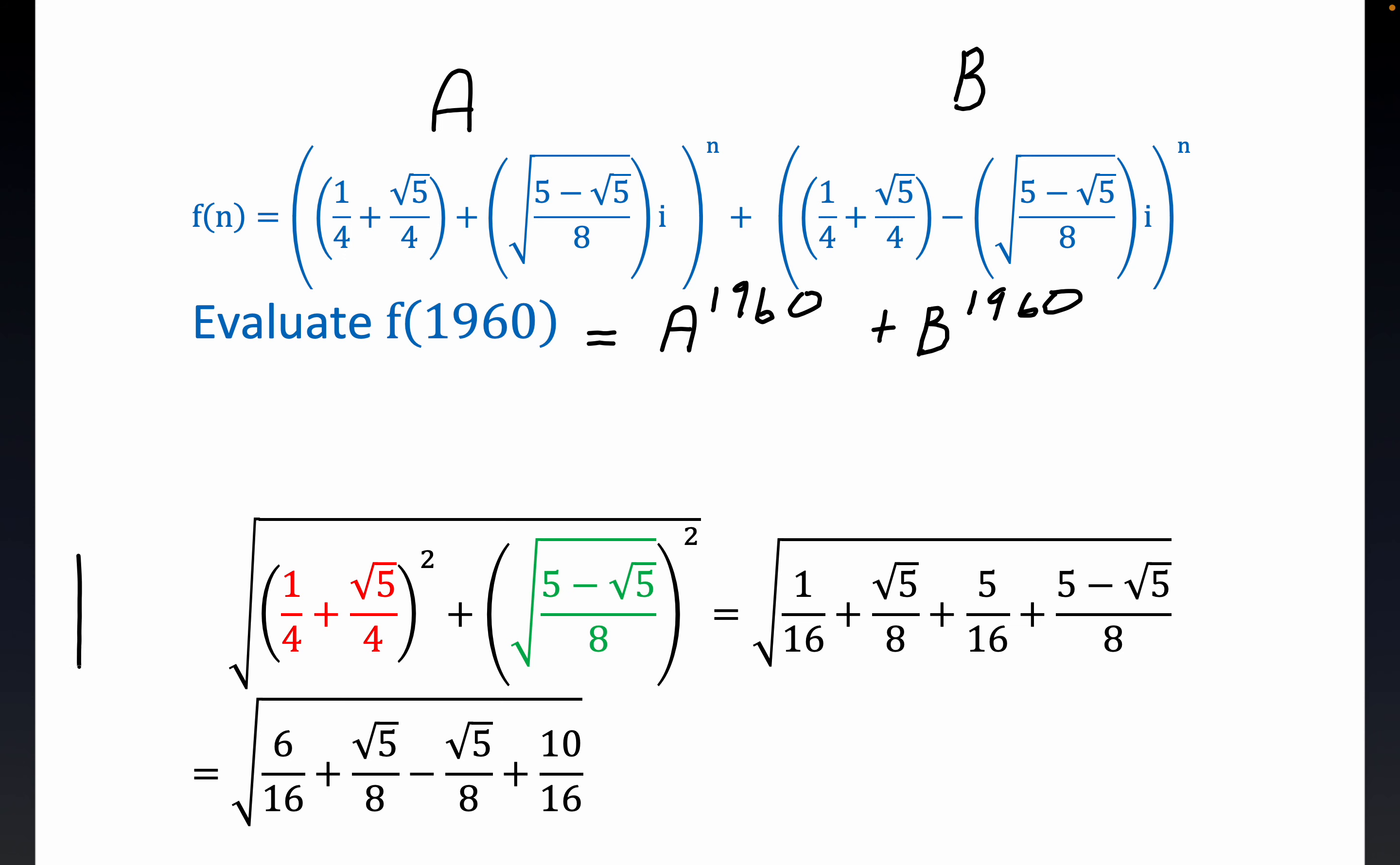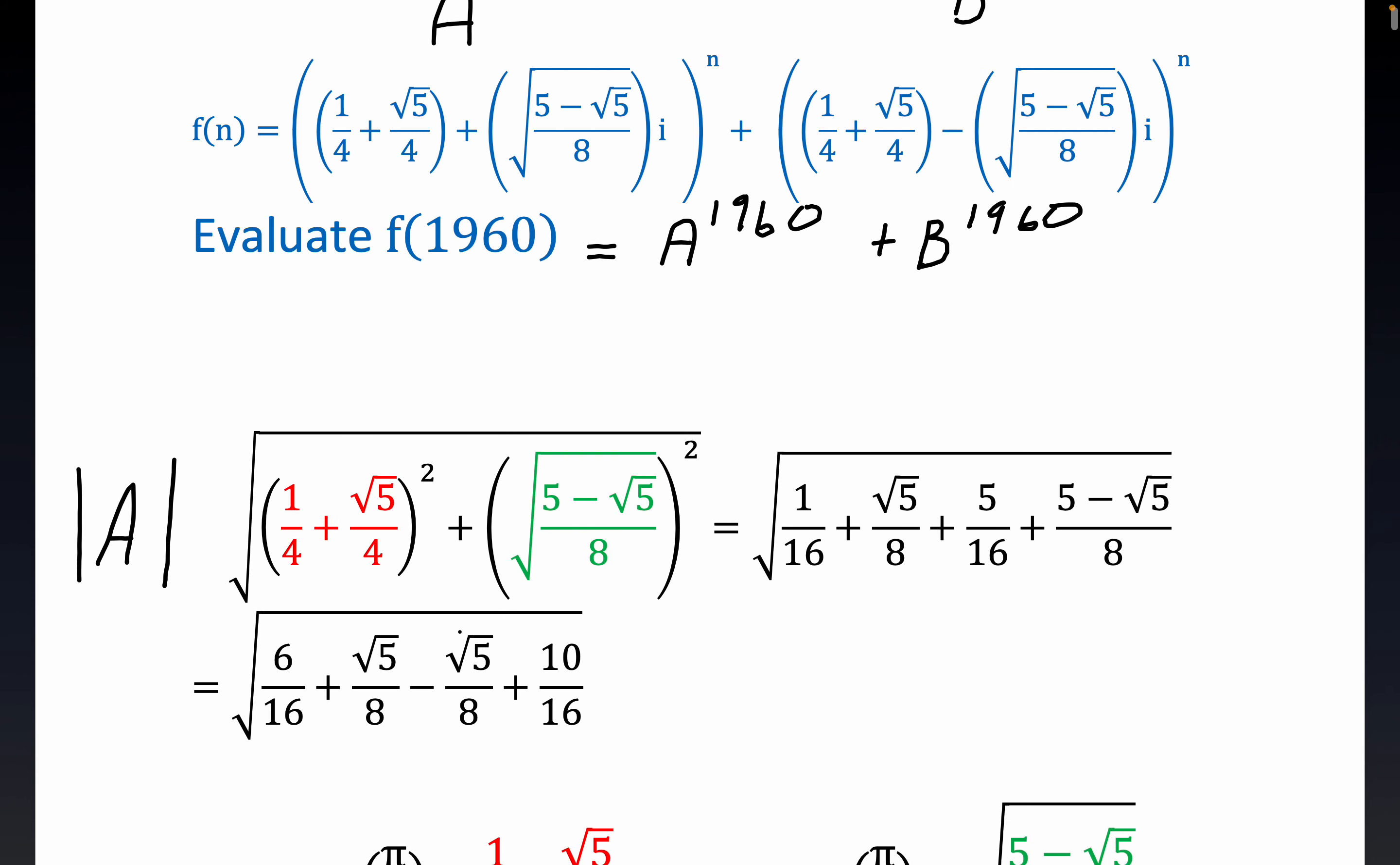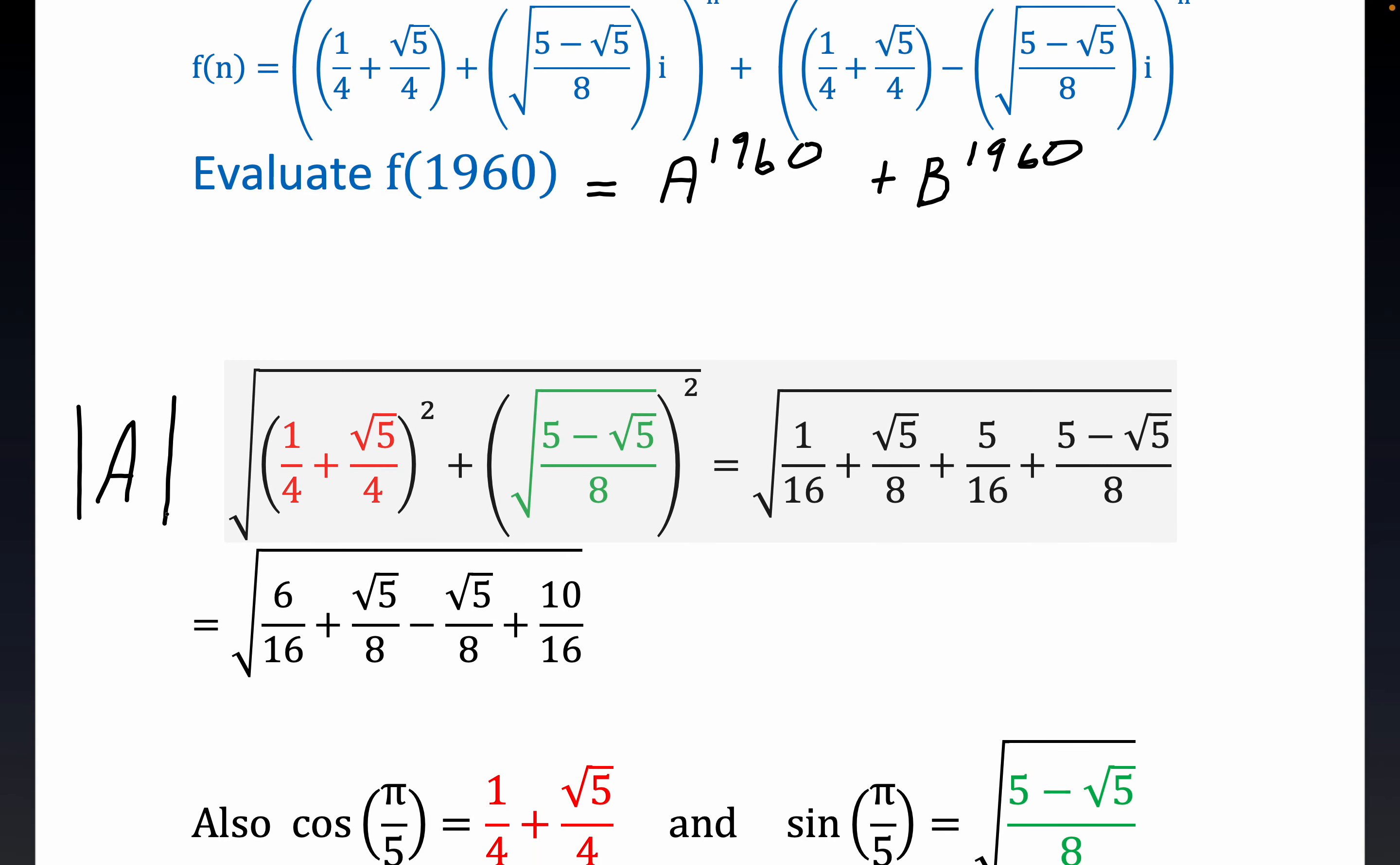Notice that the modulus of the first number, that is its distance from the origin, we'll use just the standard absolute value notation here. The modulus of the complex number A is the square root of the sum of the squares. Alright, and that's exactly what I've written down right here for you folks. Now you'll see why I color coded it in just a minute, but if you go through the arithmetic for A, the modulus of A, you'll see that you get one.